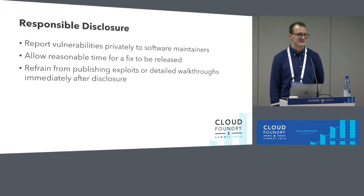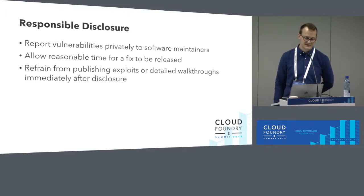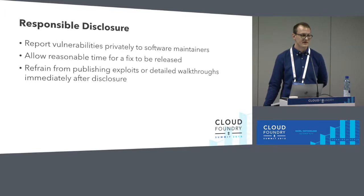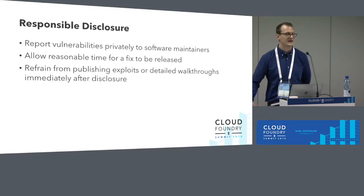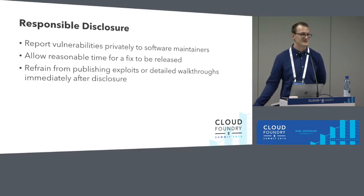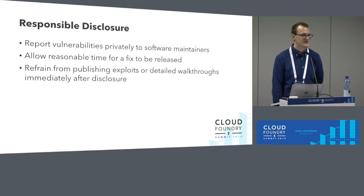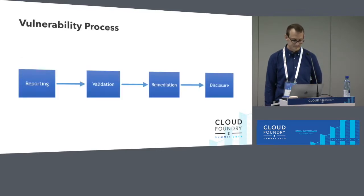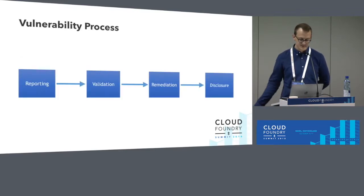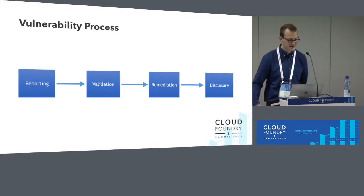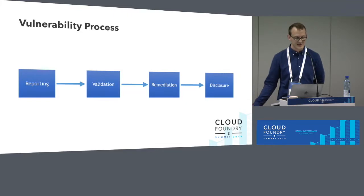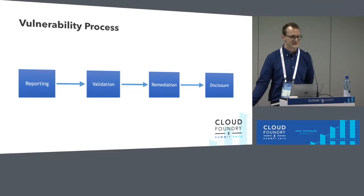As part of that process, we also commit to disclosing vulnerabilities in a reasonable amount of time. So if we get a fix for something, the next step is telling everyone that a vulnerability exists so you can make a good judgment about when you want to update your systems. The disclosure and vulnerability process is really straightforward: it starts with reporting, then validation, then remediation, and finally disclosure to the public.